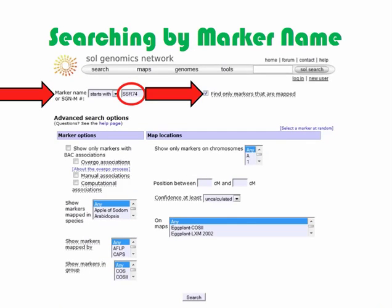I will first demonstrate searches by marker name. If you already know how to search by marker name, you may want to skip ahead to slide 12 when I demonstrate how to search by marker criteria. To search for a marker by name, type the name of the marker in the text box and click Search. In this example, I am interested in finding more about the marker SSR74. I type SSR74, circled in red, in the search box. I am using the default settings: the marker name starts with the text in the search box and I only want to find markers that are mapped.